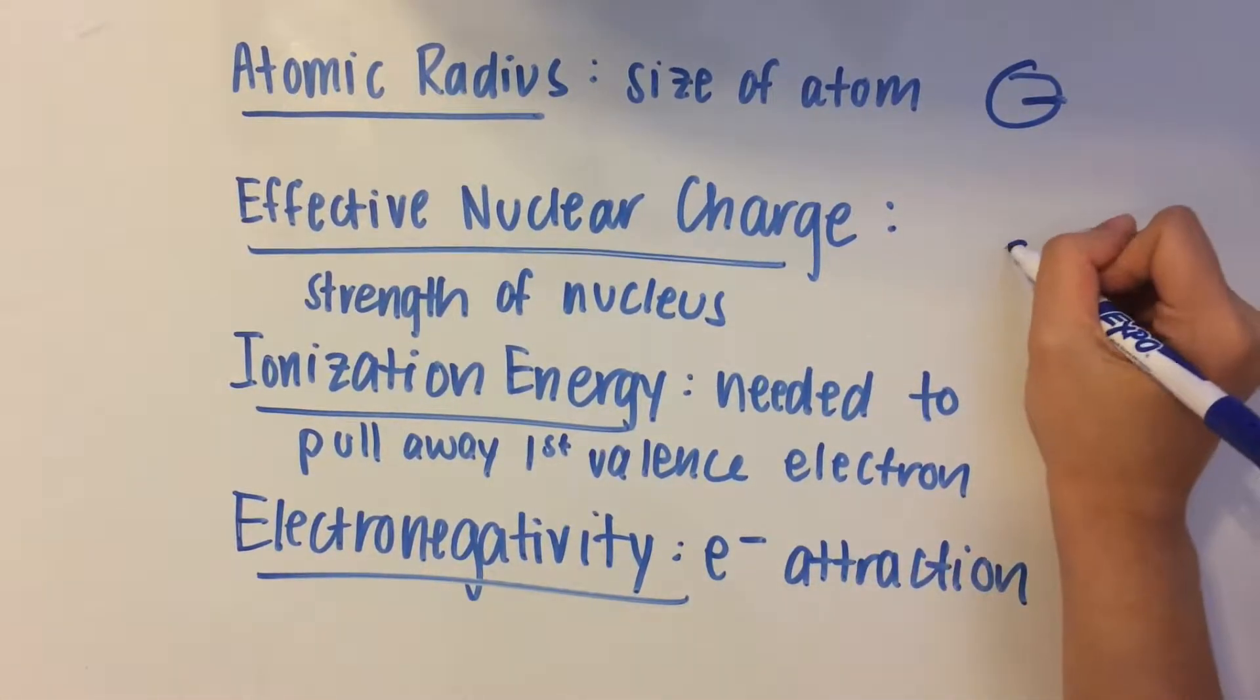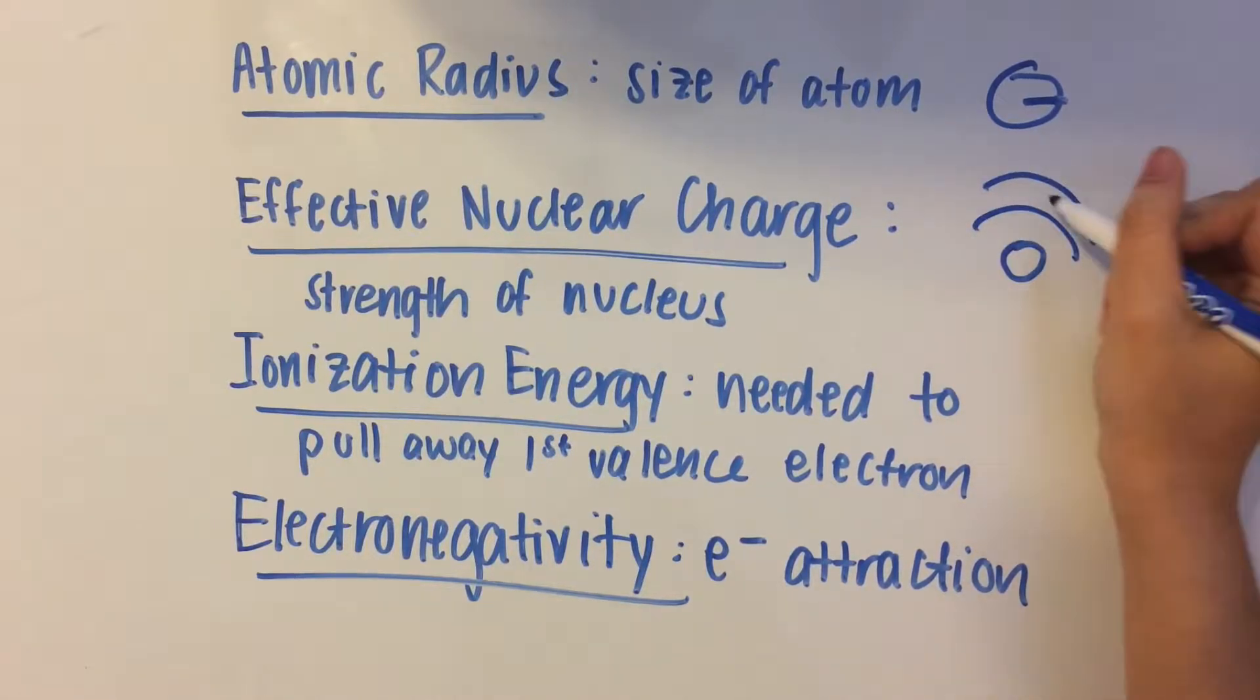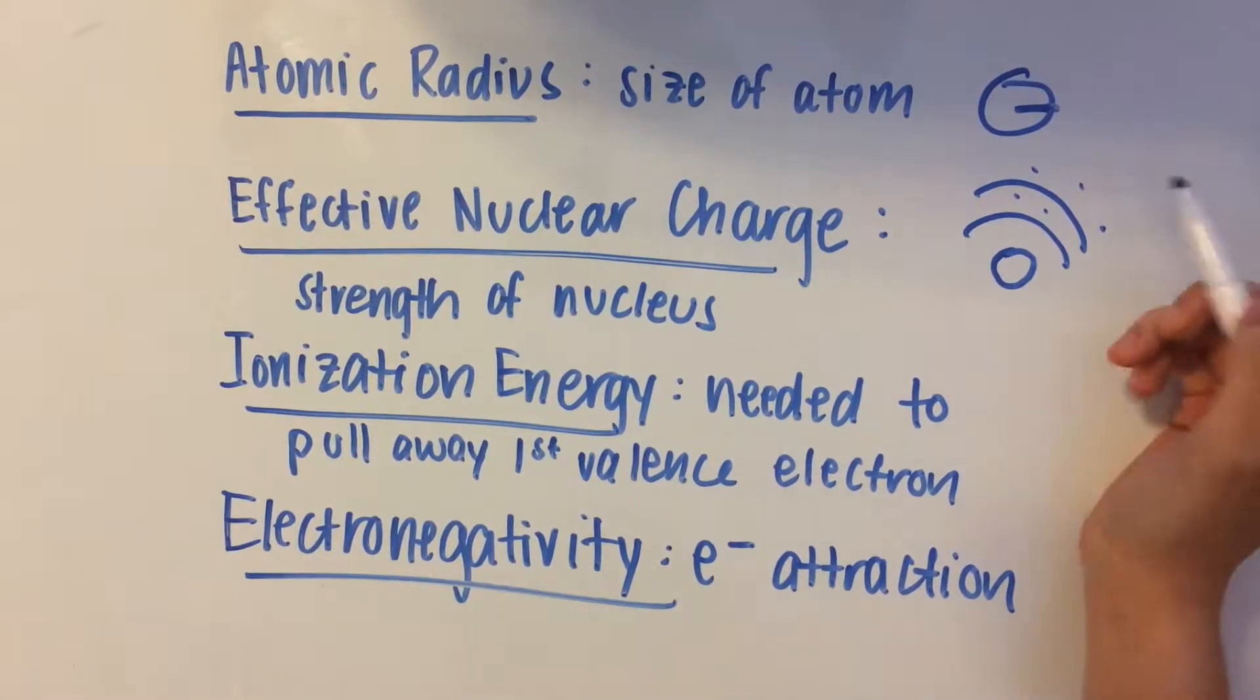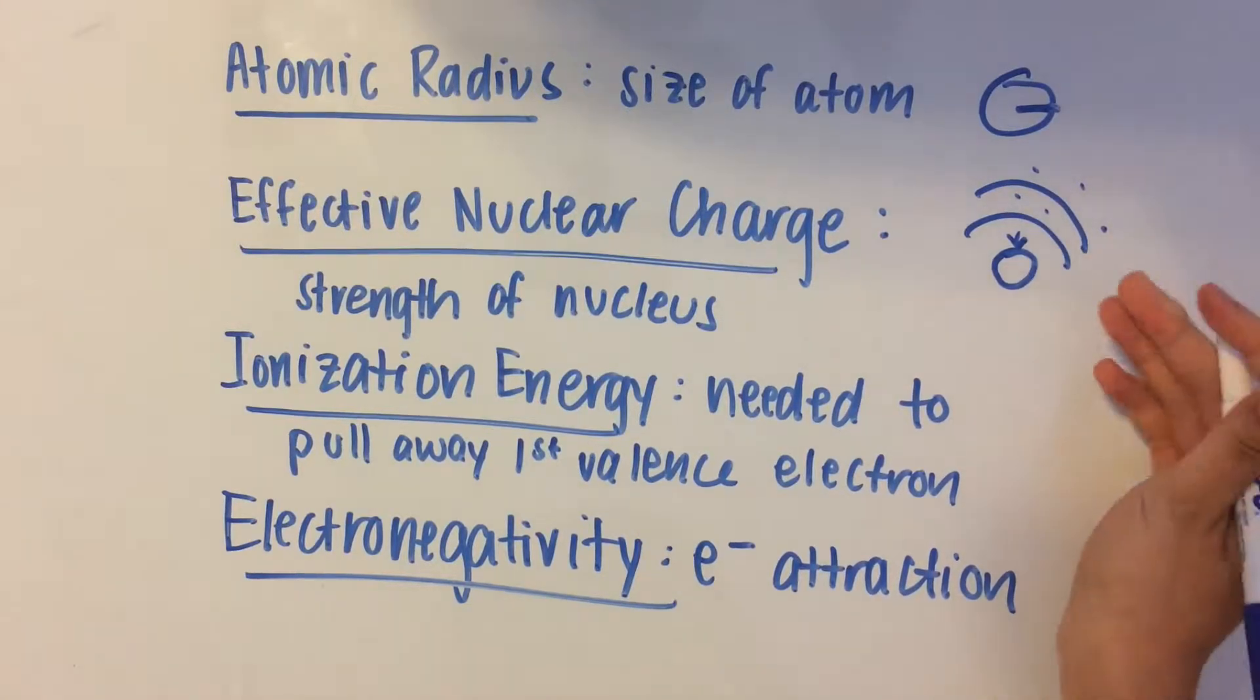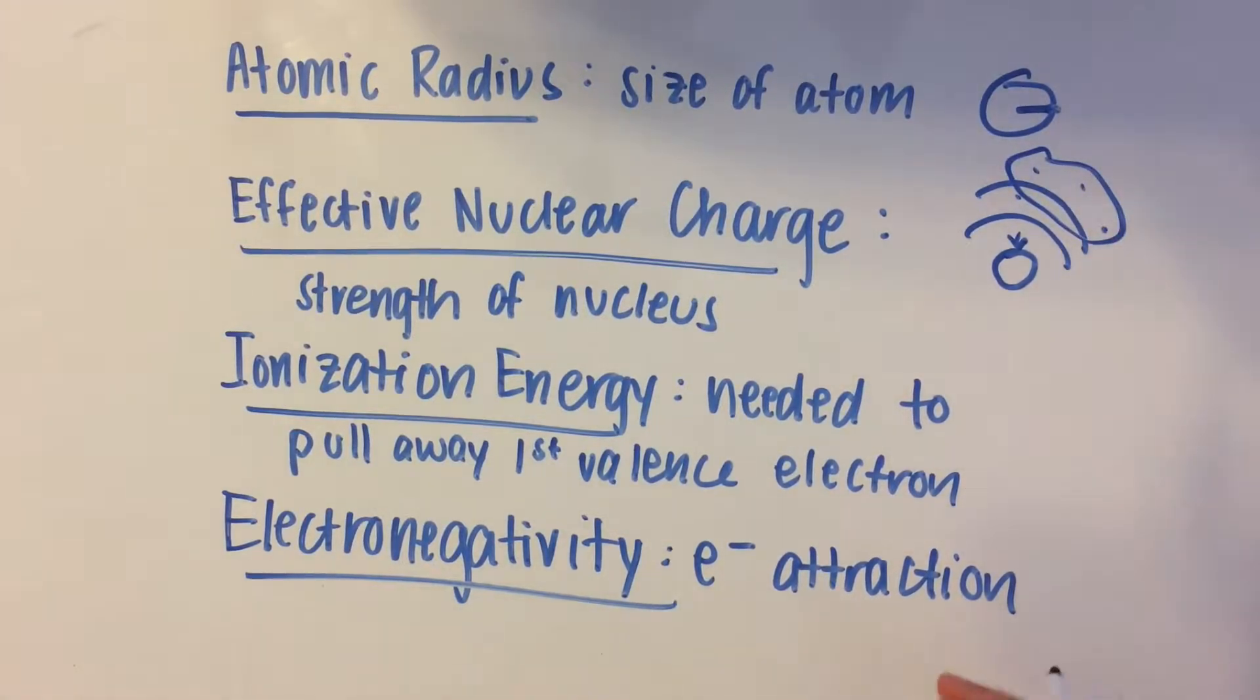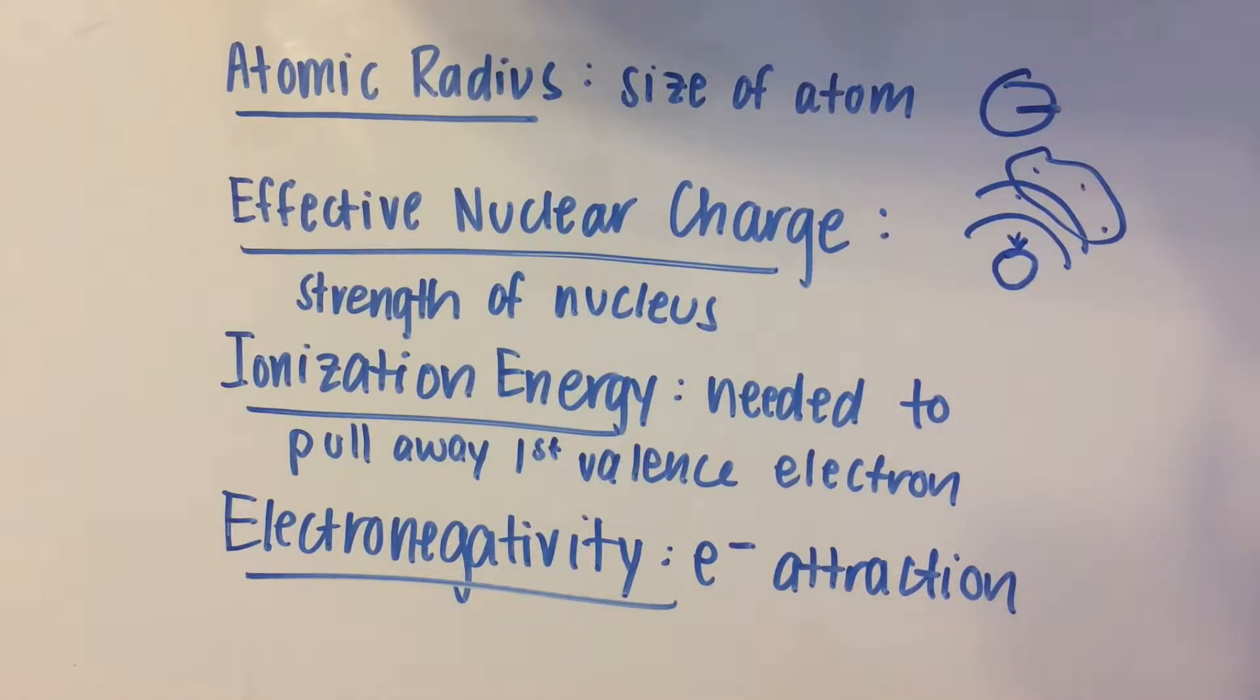And that also goes hand in hand with electron shielding. So basically, let's envision this nucleus, and there's these different shells that contain electrons. And what really happens is these electrons that are closer to the nucleus, these shield the positive attractive forces of the nucleus from these electrons. So the outermost electrons really feel the attractive forces from the nucleus a little less than the ones that are closer to it.